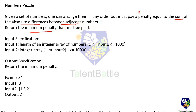Let's check the input and output specifications. There are two inputs: first, the length of an integer array of numbers; second, the integer array itself. The length is accepted from the user, and based on that length, the array elements are taken as input. The output is the minimum penalty value that we have to return.